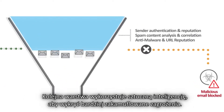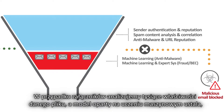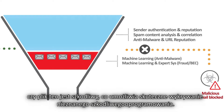The next layer uses artificial intelligence to discover harder to find threats. For email attachments, we look at thousands of features of the file, and a machine learning model determines if it is malicious to effectively find unknown malware.